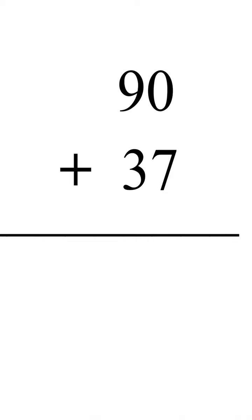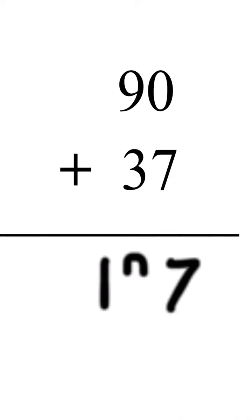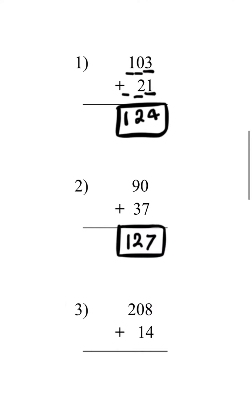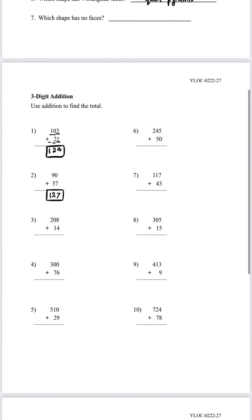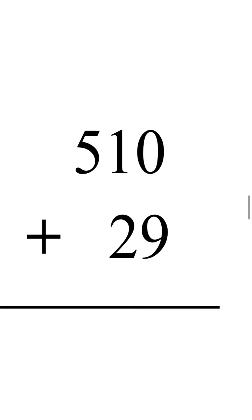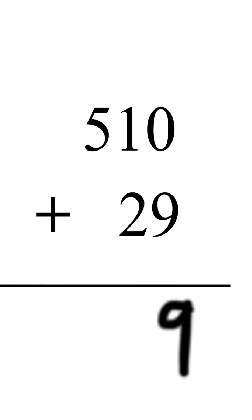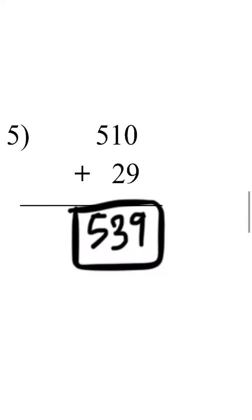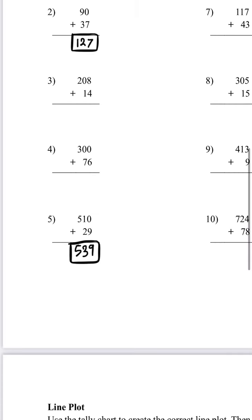Let's look at number two: zero plus seven is seven, and nine plus three is 12, so 127 is the answer for number two. Let's look at number five: zero plus nine is nine, one plus two is three, and five plus zero is five, so 539 is the answer for number five.